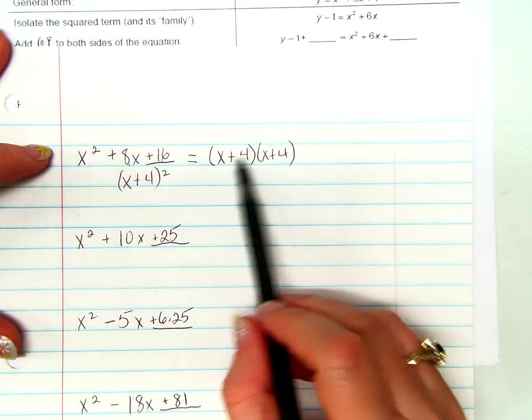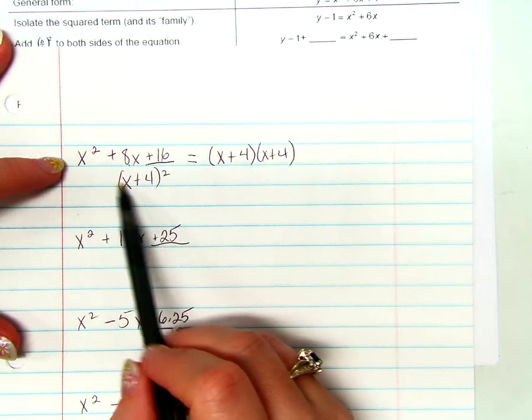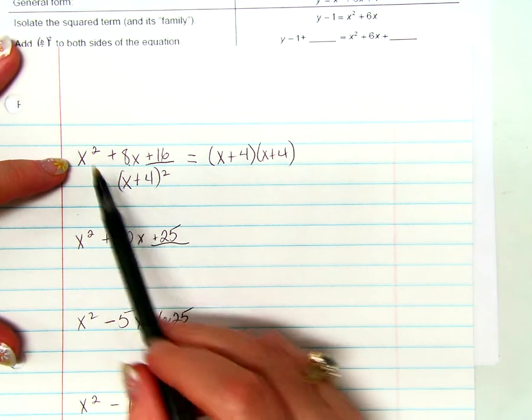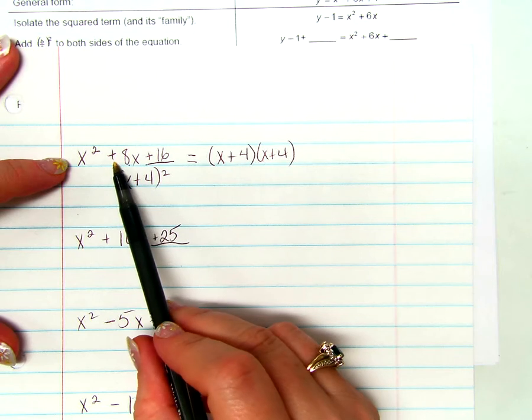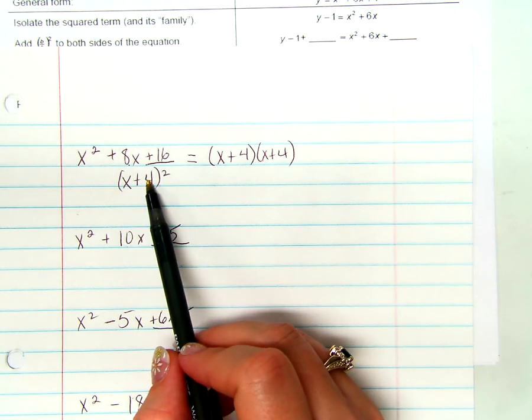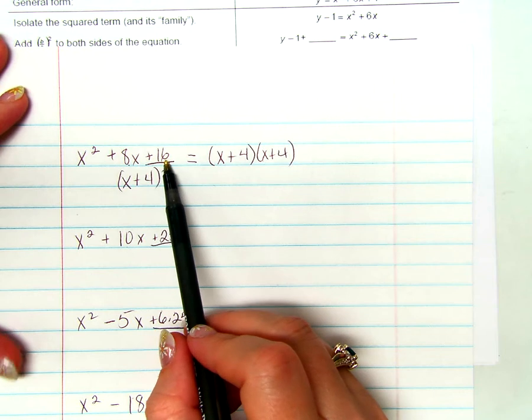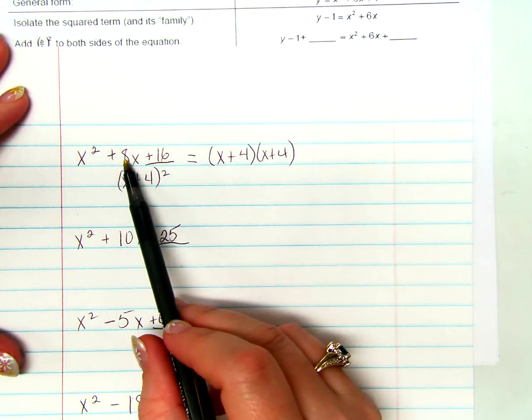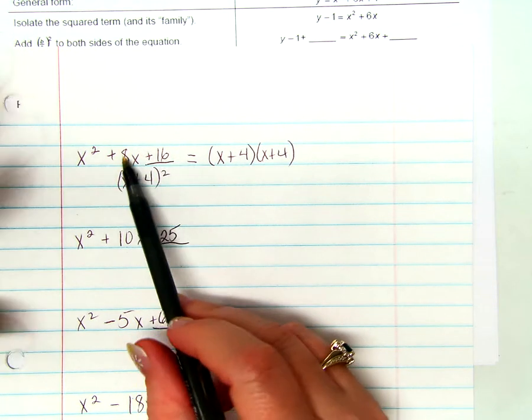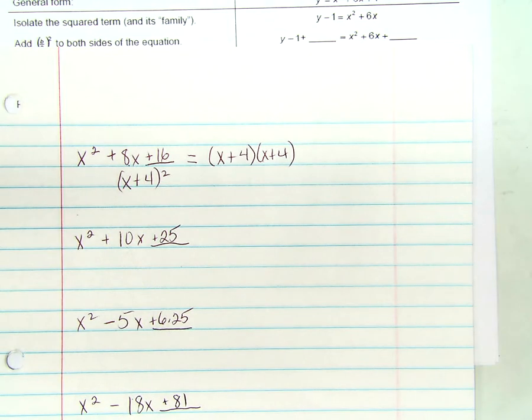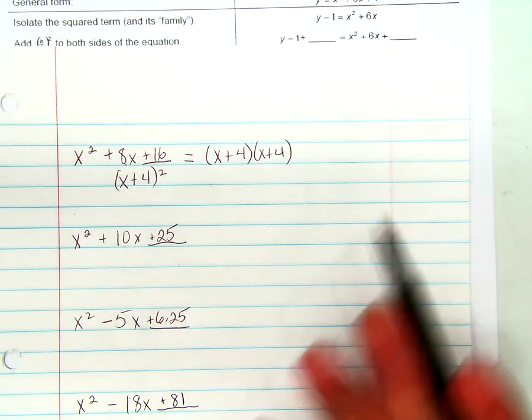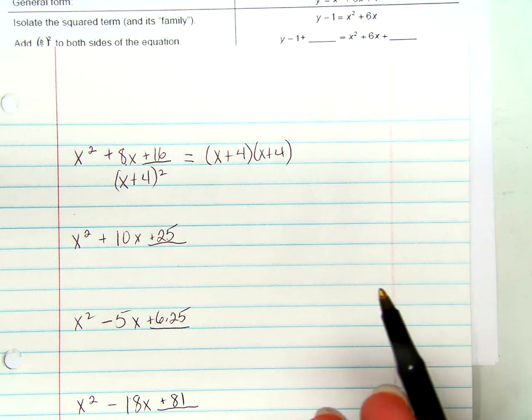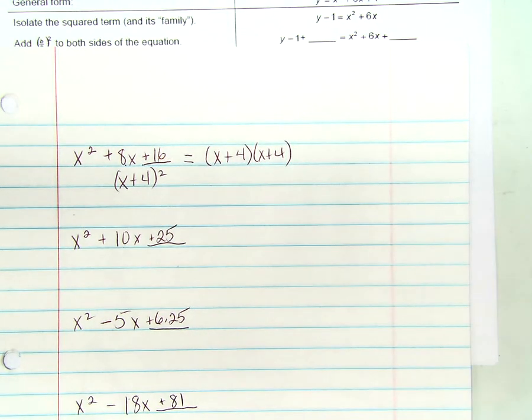x plus 4 squared. And so this is how I want to be able to write it today. So how do I get from here, from the trinomial to the binomial? Where does this term come from? If we don't want to have to think of factoring every time, this comes from the square root of this one, right? Where does this sign come from? The sign of the middle number. And where does this number come from?